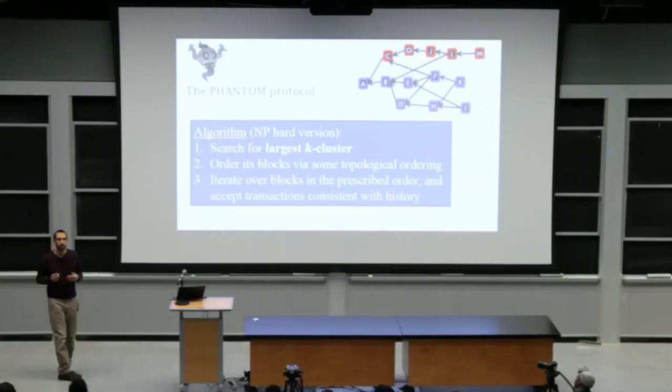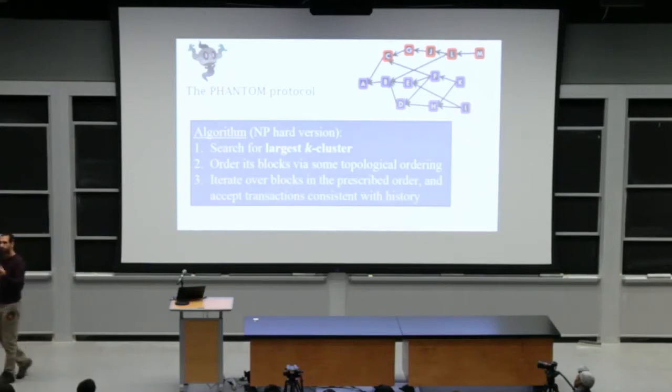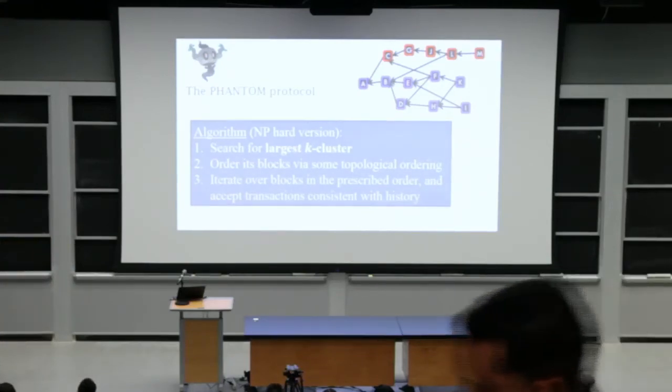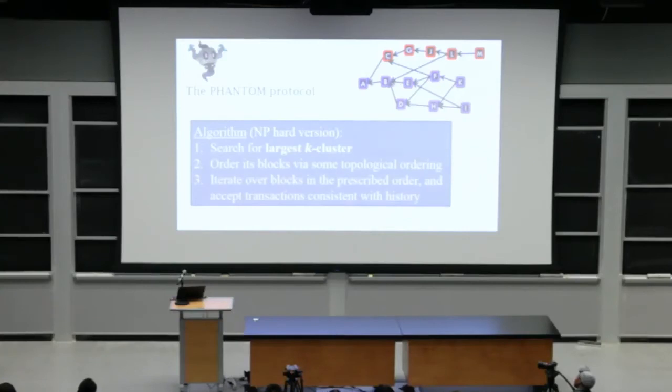And the phantom protocol conceptually says pick the largest K cluster, and this will be your honest set of blocks. So given a dag, you don't know what happened there. You don't know really, the attacker doesn't write this as an attacker block. You need to reason about it. So the algorithm says pick the largest K cluster. This cluster represents with high probability, the set of honest blocks.